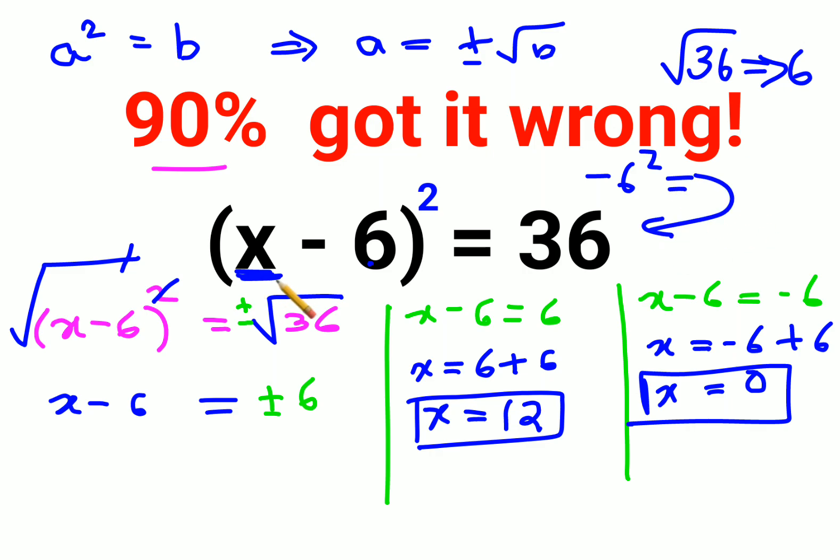And if you put the value of X as 12, then you get 12 minus 6 which gets you 6. And 6 square, answer comes out to be 36. So here we can say both these values are absolutely correct for this particular question.